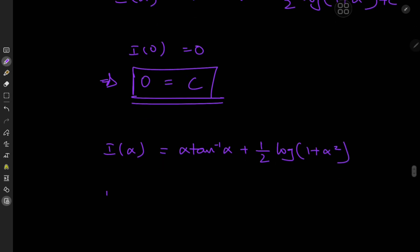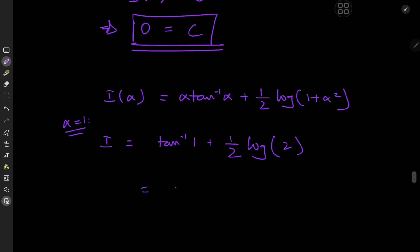The target integral was the case for alpha equal to 1. So I equals inverse tangent of 1 plus one half times the logarithm of 2, which means we have pi over 4 plus log of root 2 — or one half of log 2 — write it any way you please. That is a pretty nice result.